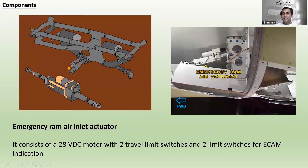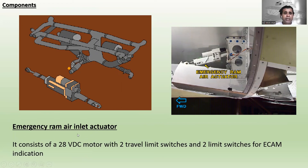That covers the operations. Now let's look at the components. The emergency ram air actuator is situated here. It consists of a 28-volt DC motor with two travel limit switches and two limit switches for ECAM indication.